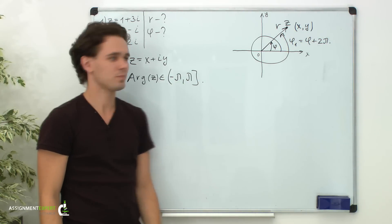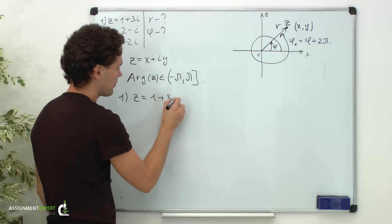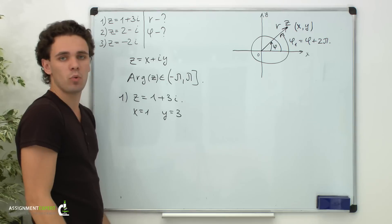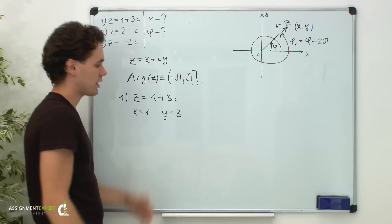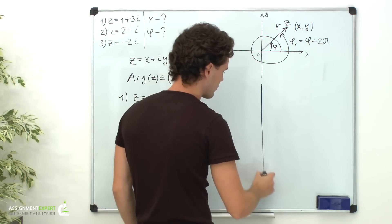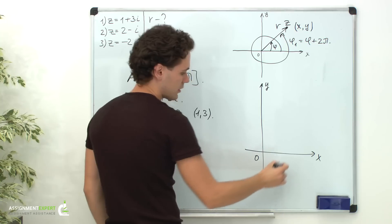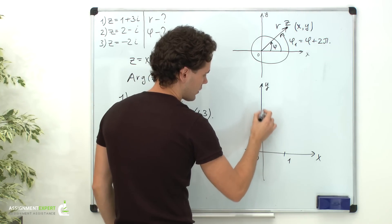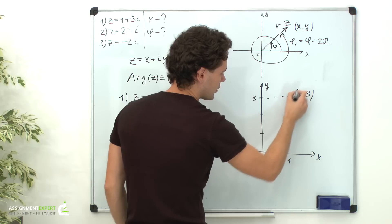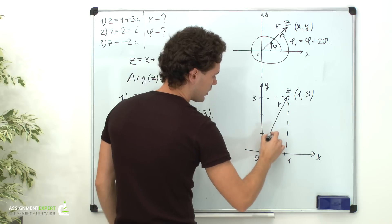Now let's consider the first example. Here we have the complex number z equals 1 plus 3i. In this case x equals 1 and y equals 3, so the endpoint of the radius vector representing this complex number is (1, 3). x equals 1 and y equals 3, so this is the endpoint (1, 3), and this is the radius vector representing complex number z with modulus r and angle phi.